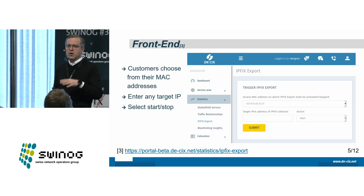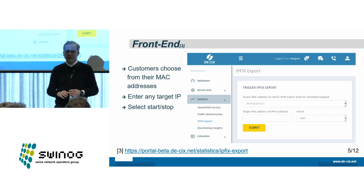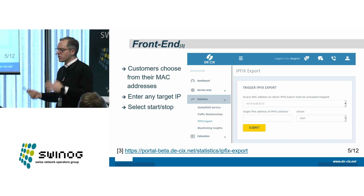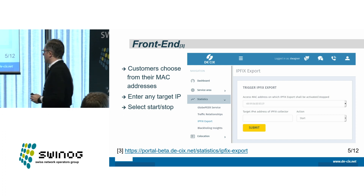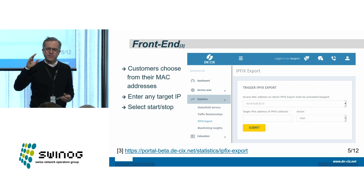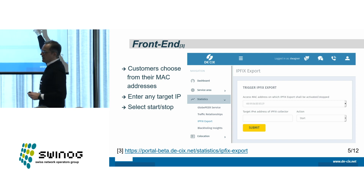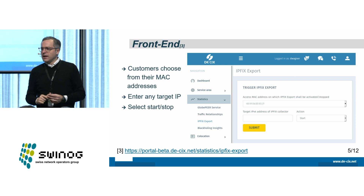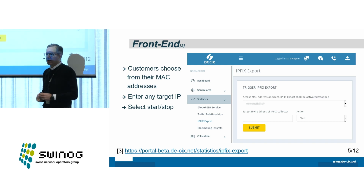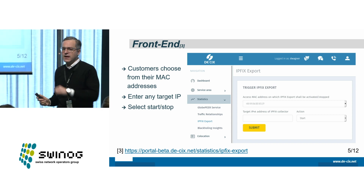This is how you switch it on. You go to our portal — we have a new beta portal which provides a lot of self-service functions. If you want to change the MAC address, order a new peering service, or a cloud connectivity service, you just go into the portal, click a few buttons, and the services will be provisioned on demand. The same is true with the IPfix port. You select the port you want to use — we differentiate by MAC address — then you tell us the IPv4 address of your IPfix collector. You can start and stop this, and that's everything you need to do.